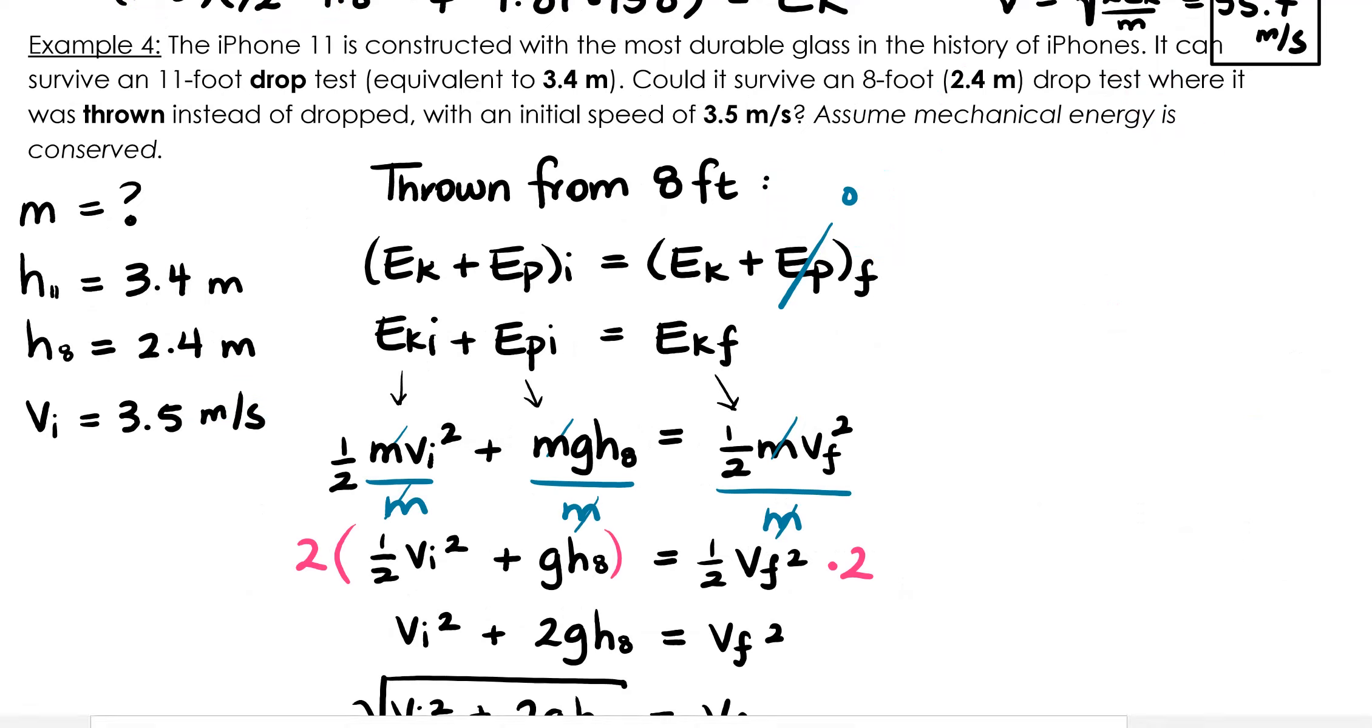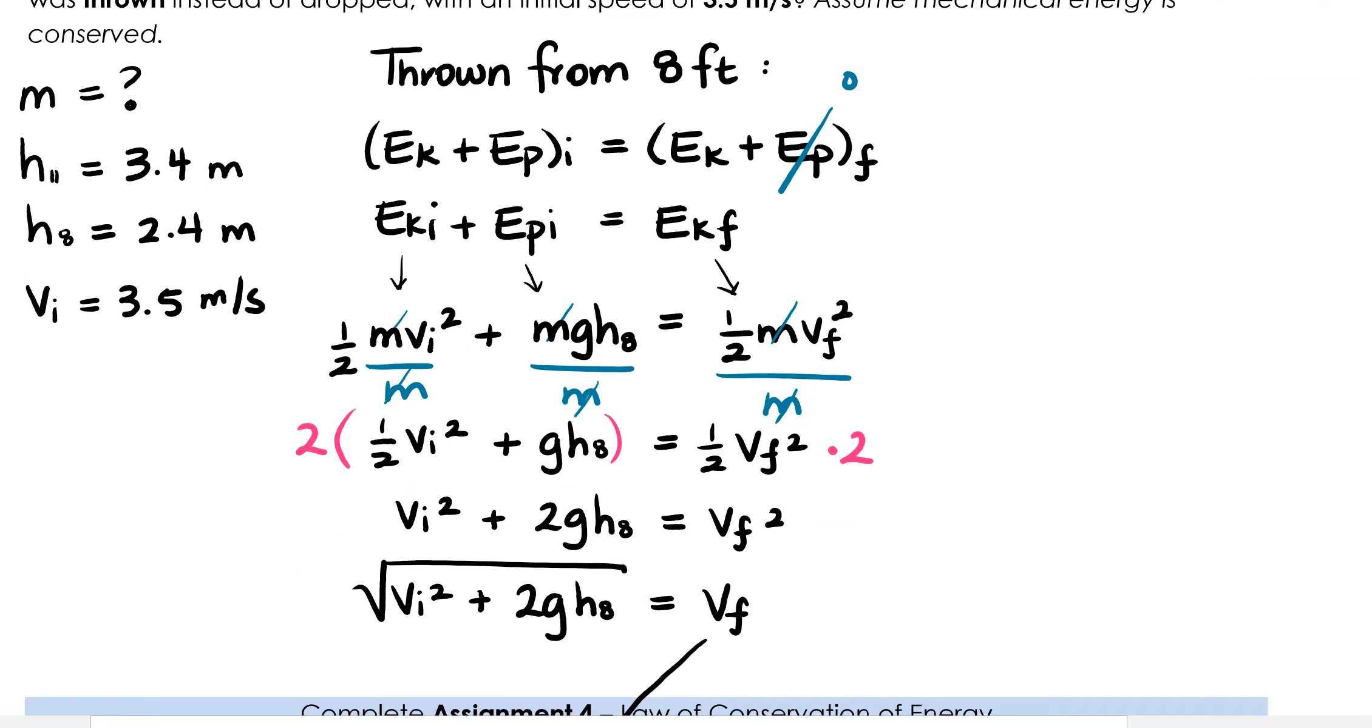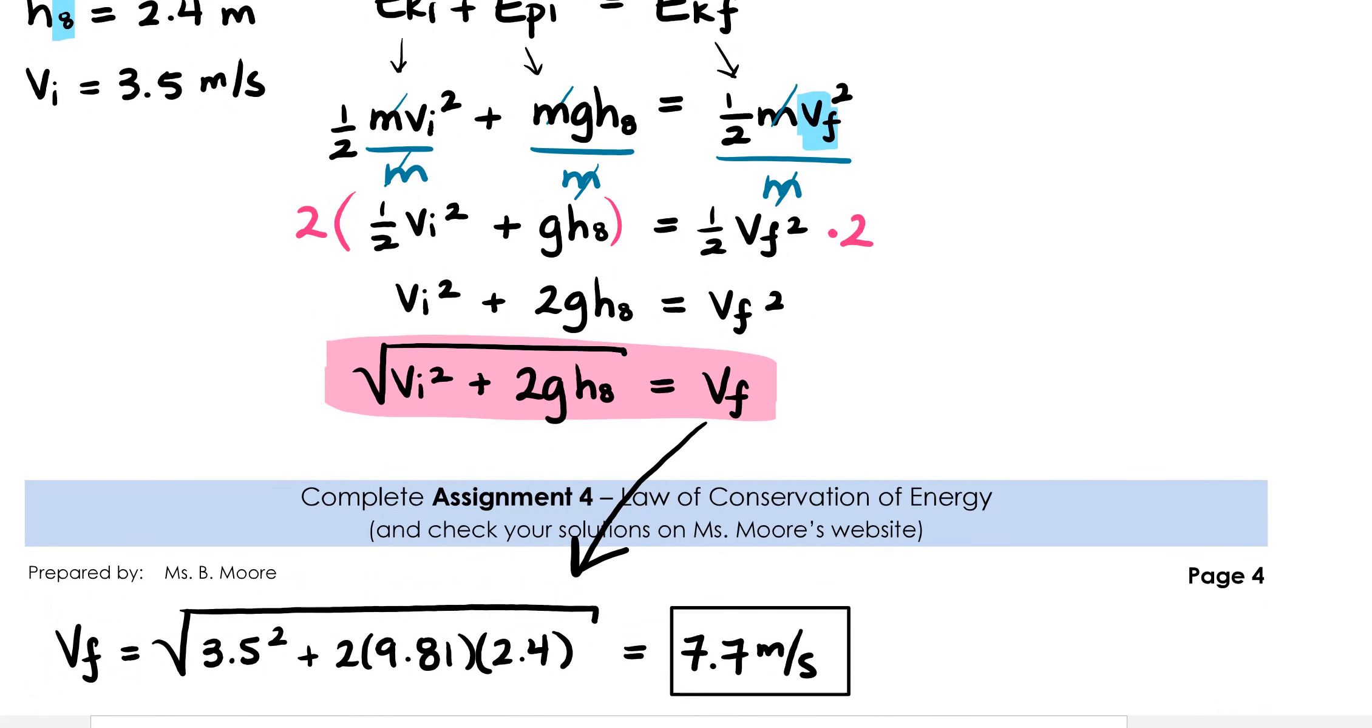Okay, let's go over our answer. So if the iPhone 11 can survive an 11-foot drop test, could it survive an 8-foot test where it's thrown instead of dropped? I started off with my calculation for if the iPhone is thrown from 8 feet with an initial speed of 3.5 meters per second. This time, we're isolating v final. In order to do that, we're going to divide every term in the equation by m and then multiply each side of the equation by 2. This will help us to isolate vf. Finally, we take the square root of each side and we have vf equals the square root of vi squared plus 2gh8. I made sure to distinguish between the two different heights in this question by using the subscripts 11 and 8 to represent 11 feet and 8 feet. This is really helpful when you're dealing with multiple quantities that use the same symbol, like H.